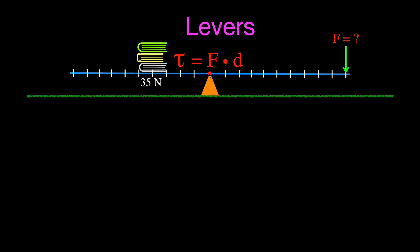This is the first example. We have our pivot point and the torque equation: force times distance. We have a lever with three books stacked up that apply a total force of 35 Newtons — that's our output force. Each mark on the lever is 10 centimeters, or 0.1 meters, so the books are 0.4 meters from the fulcrum. We want to know how much force we'd need to apply to lift those books. The fulcrum is in the middle, making this a first-class lever, with the fulcrum between the load and the effort.